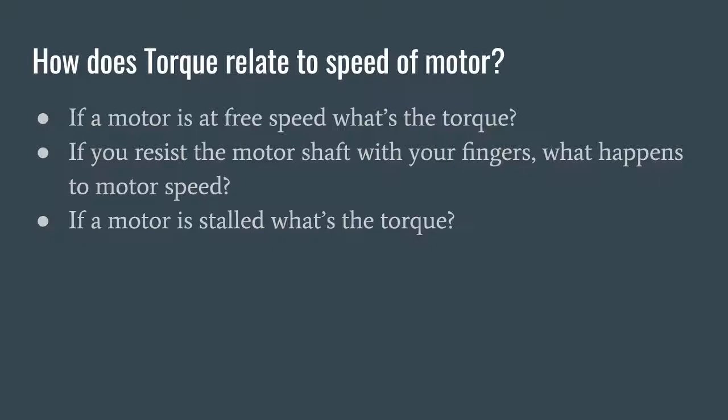And if you're at free speed, there's no torque, right? So in between, it just trades off linearly. So if you're at 30% free speed, what percent stall torque are you at? 70%. Exactly. If you're at 70% free speed, what percent stall torque are you at? 30%. Exactly.